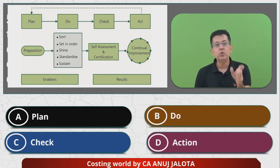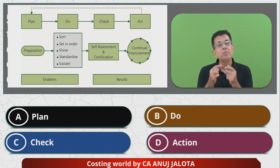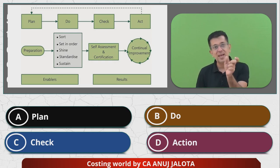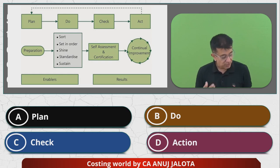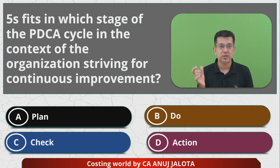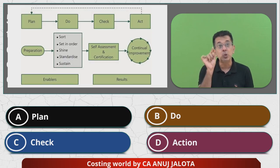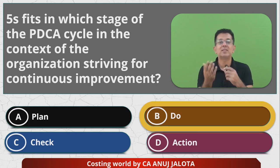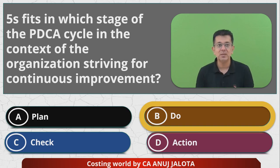So Plan and Do are enablers — those things help you to achieve what you want. And what you achieve is called the results: Check and Act. Coming back to the question: 5S fits into which stage? 5S fits into the Do stage. It's there in the Do stage. Out of the four options, Do should be the correct answer, so the answer is B. That is the correct answer. See you all next time. Bye. Happy learning.